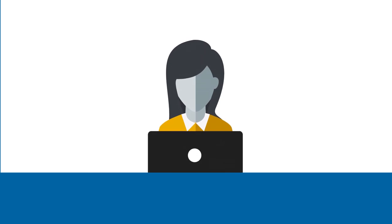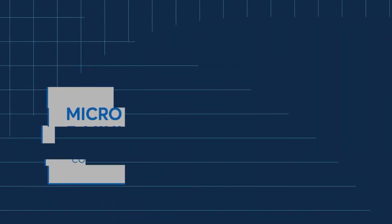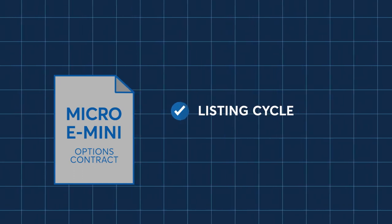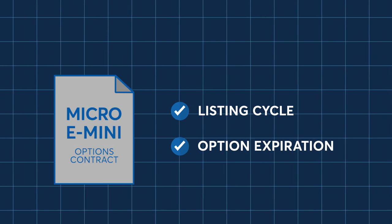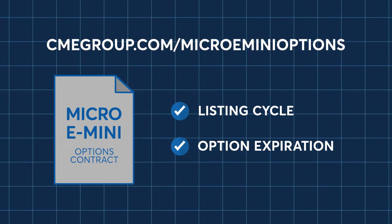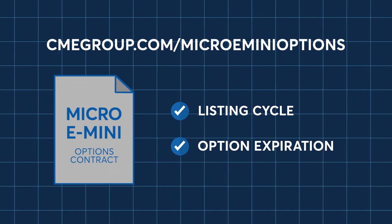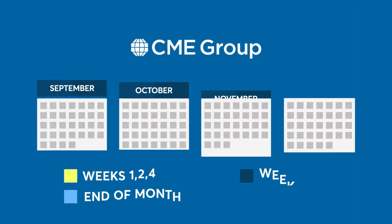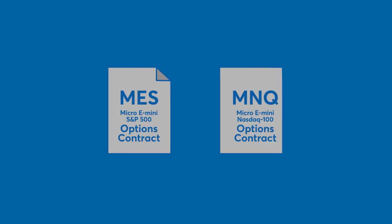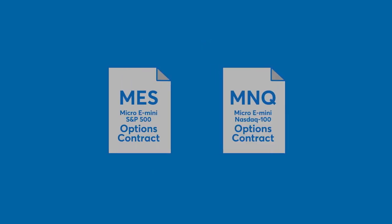Both American and European-style options can always be traded out of prior to their expiration. Regardless of the option product that you trade, it's important to understand the listing and expiration of that product to appropriately manage your portfolio. The details of the listing cycle and expirations can be found on cmegroup.com. With the combination of weekly, serial, end-of-month, and quarterly options, both short-term and longer-term strategies can be executed, allowing flexibility and options for all traders.